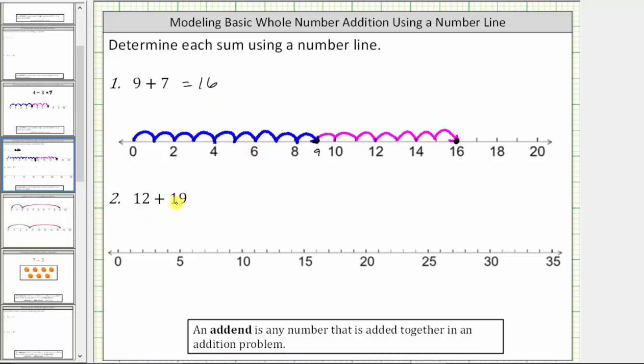And then finally we have 12 plus 19. So to model 12, we could start at zero and then jump to 12, but let's keep it consistent and just count by ones. And again, notice how we have labels every five units, and tick marks every one unit.